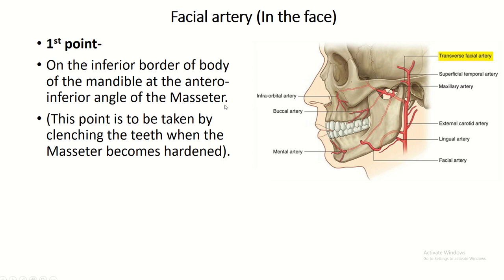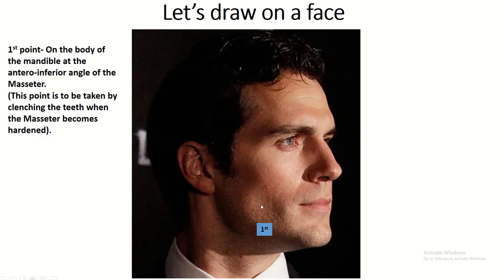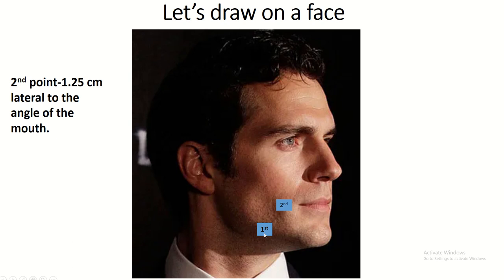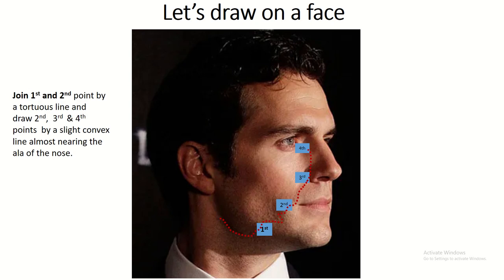The second point is 1.2 centimeters lateral to the angle of the mouth. The third point is at the ala of the nose. The fourth point is at the medial angle of the eye. Join the first and second points by a tortuous line, and the second, third, and fourth points by a slightly convex line almost nearing the ala of the nose.